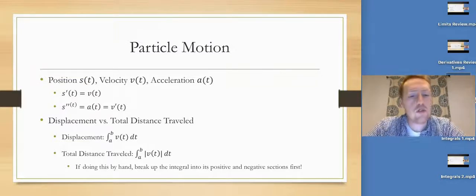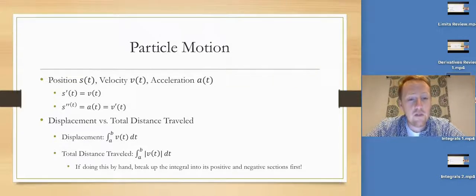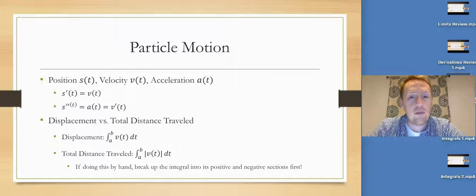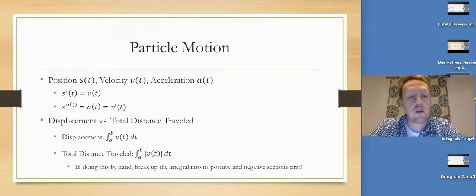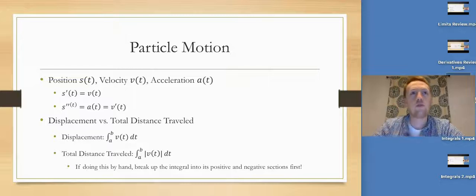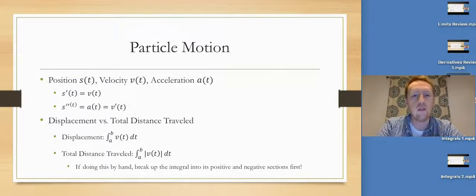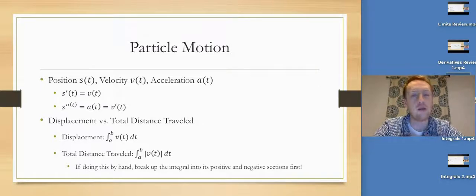We've also got displacement versus total distance traveled. Displacement is the integral from a to b of the velocity function. Total distance traveled — you just put absolute value bars on that velocity function. If you have to do this by hand, find where the velocity function hits zero and break up the integral based on that. Make every integral positive, even if you get a negative value.